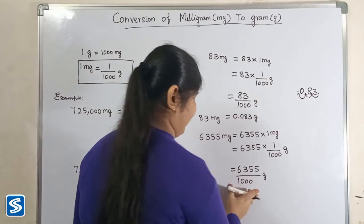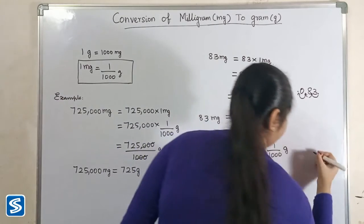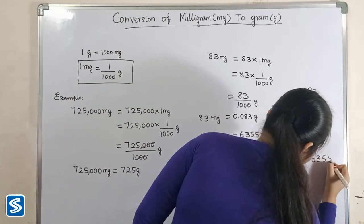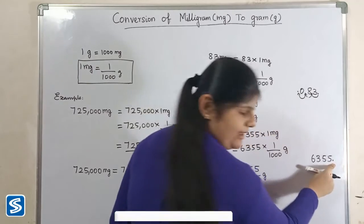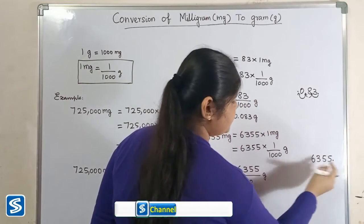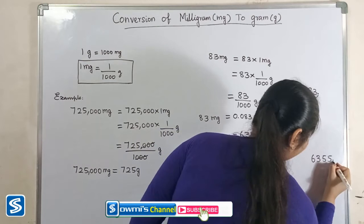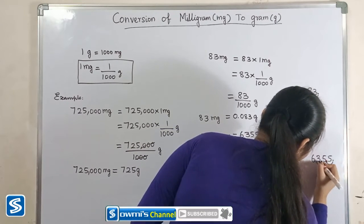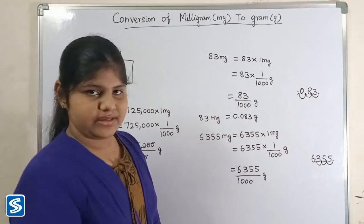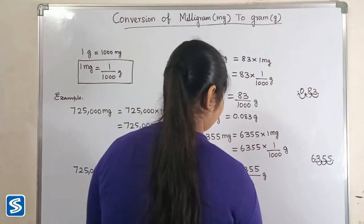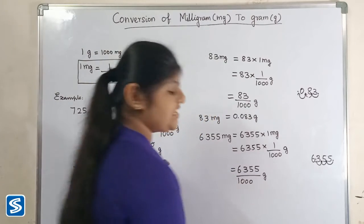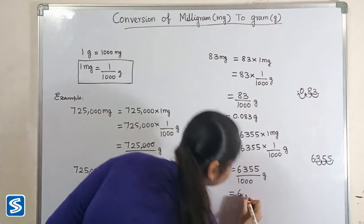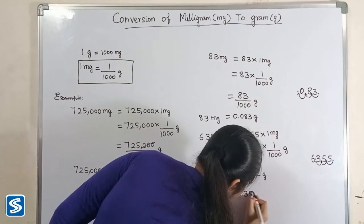The easy way to divide by 1,000 is to move the decimal point three places to the left: one, two, three. When we divide 6,355 by 1,000 grams, our answer will be 6.355 grams.